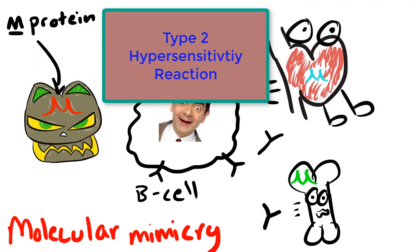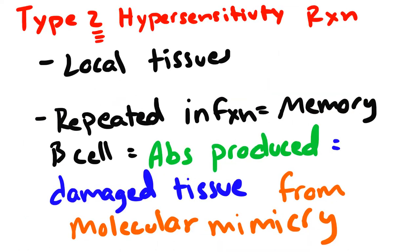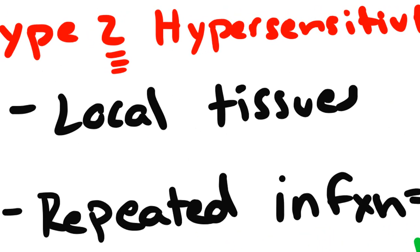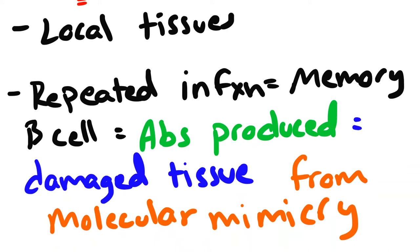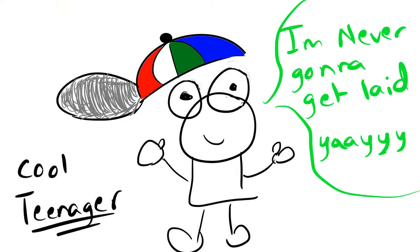This is a type 2 hypersensitivity reaction caused by immunoglobulins and cytotoxic cells, which is very specific to local tissues. The problem is that if the patient gets repeated infections, more antibodies are going to be made and the tissues are going to get damaged even more - that's why the symptoms develop later on in life.